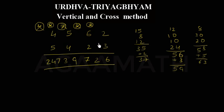So this is how to use the Urdhva Triyagbhyam method — the vertical and cross method — for better and faster calculations. This helps you a lot when you go for competitive examinations. In the coming class, I am going to discuss another method called Dwandwa Yoga system, which helps in finding squared numbers very fast, irrespective of the number of digits. Keep watching Agamath and learn maths. Thank you for listening.